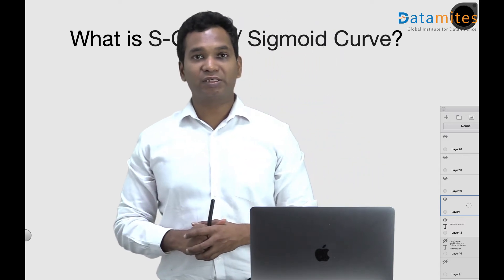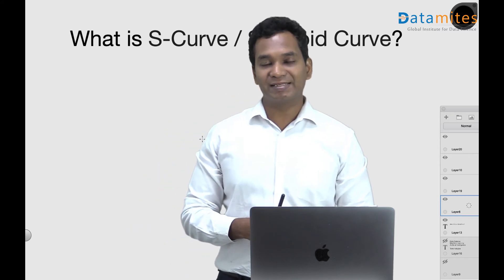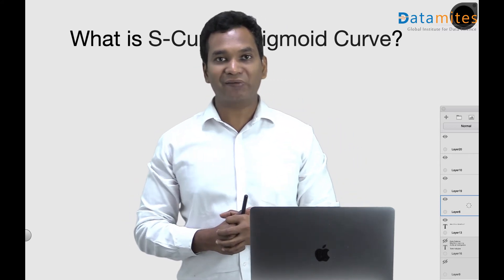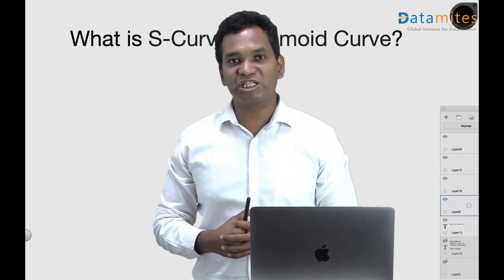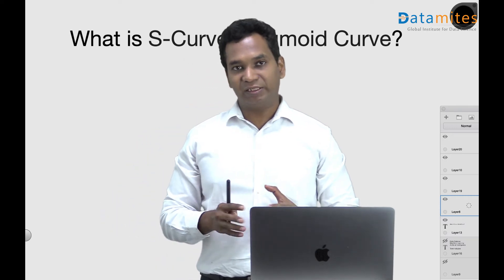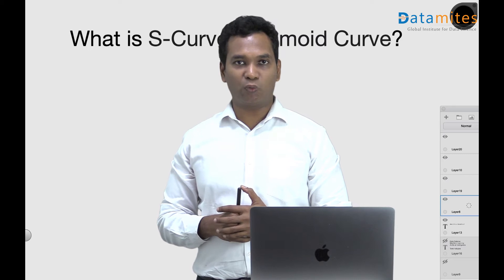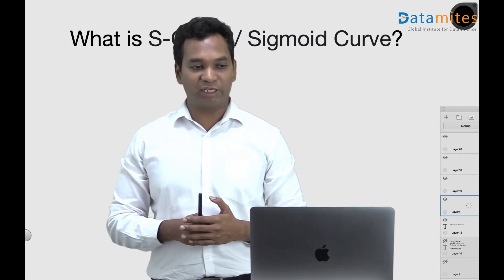So in this video we look at S-curve or sigmoid curve. This is the one we use as an activation function in neural networks and also in logistic regression for binary classification. We look into what is this S-curve, maybe a derivation, and then we will understand how we use it for machine learning applications.